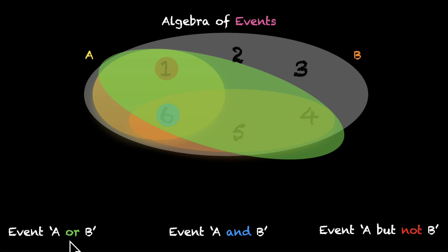In the set world, or means union of two sets. So, event A or B can be written as A union B. Similarly, A and B means A intersection B. These are symbols of union and intersection.